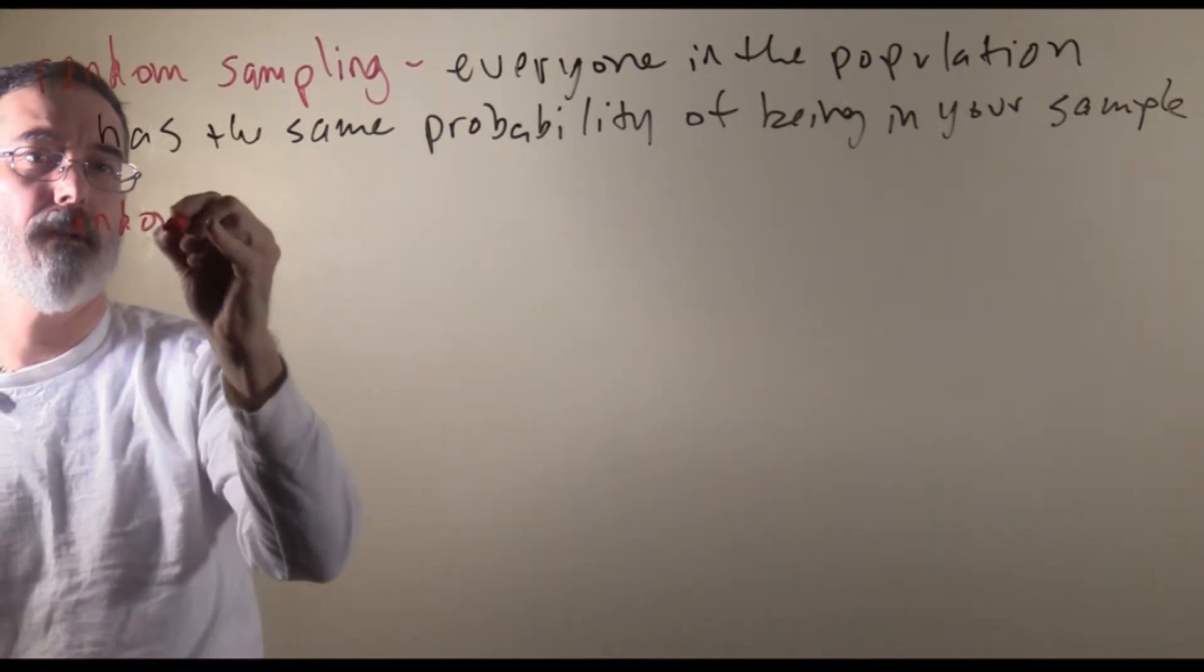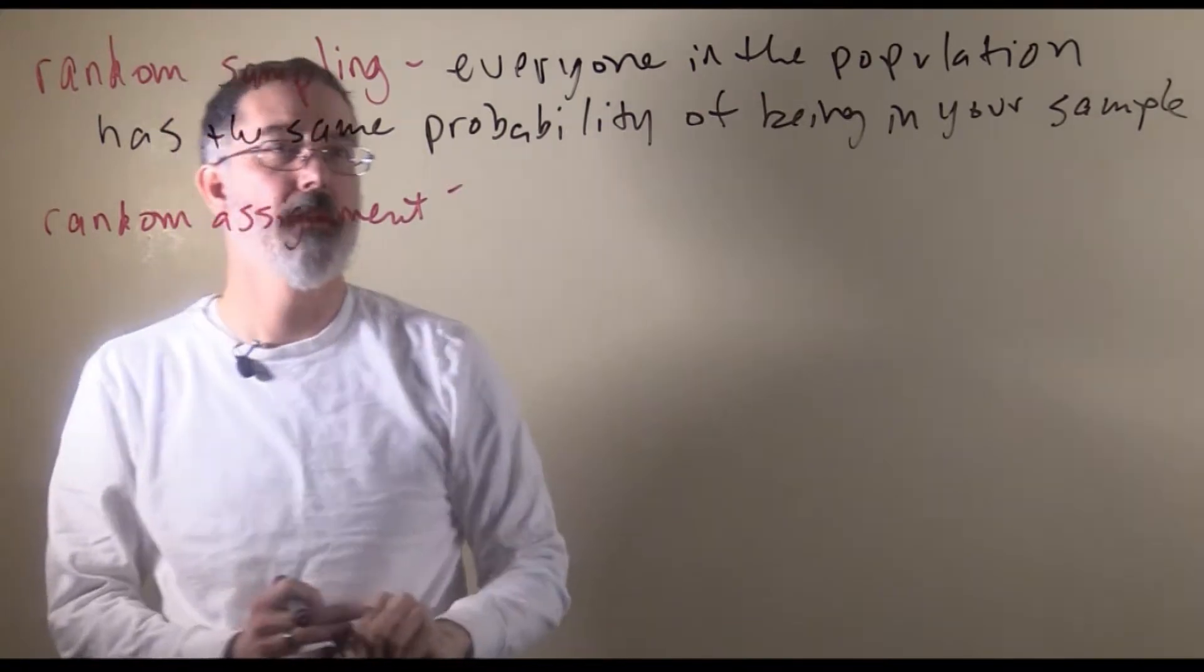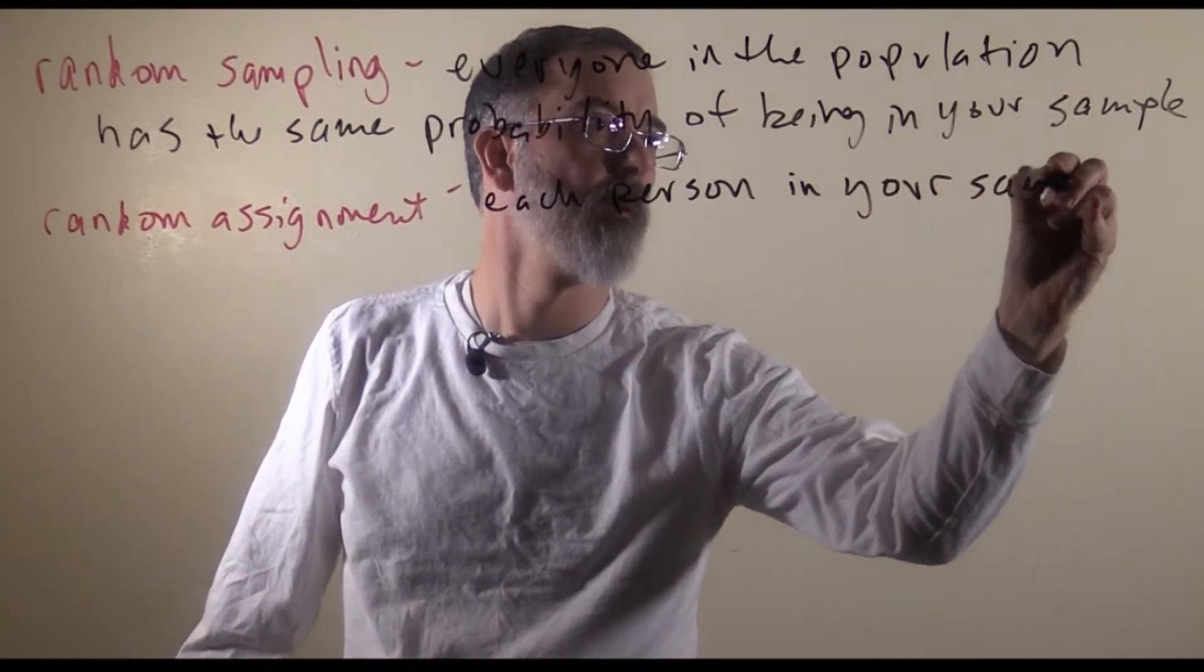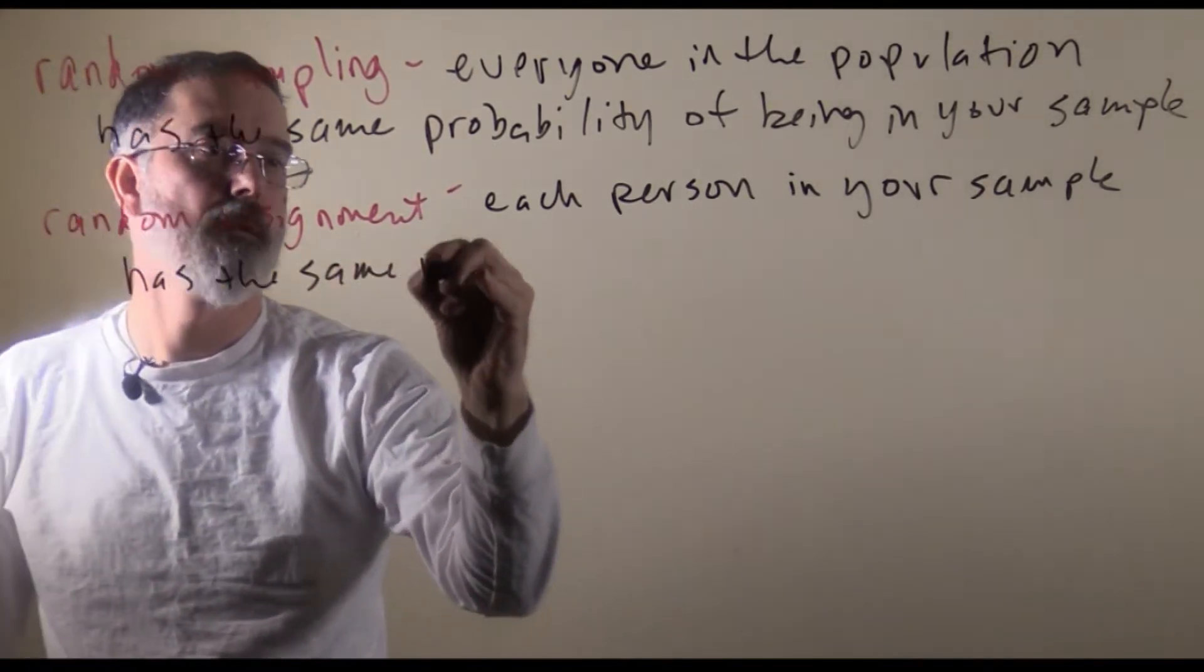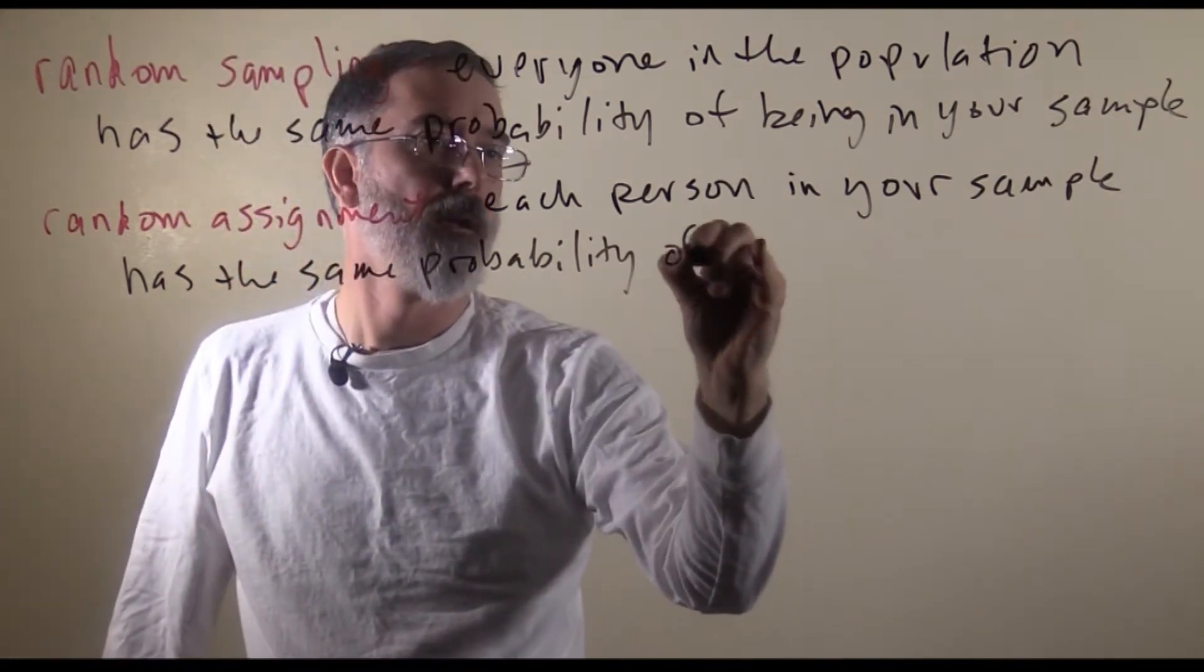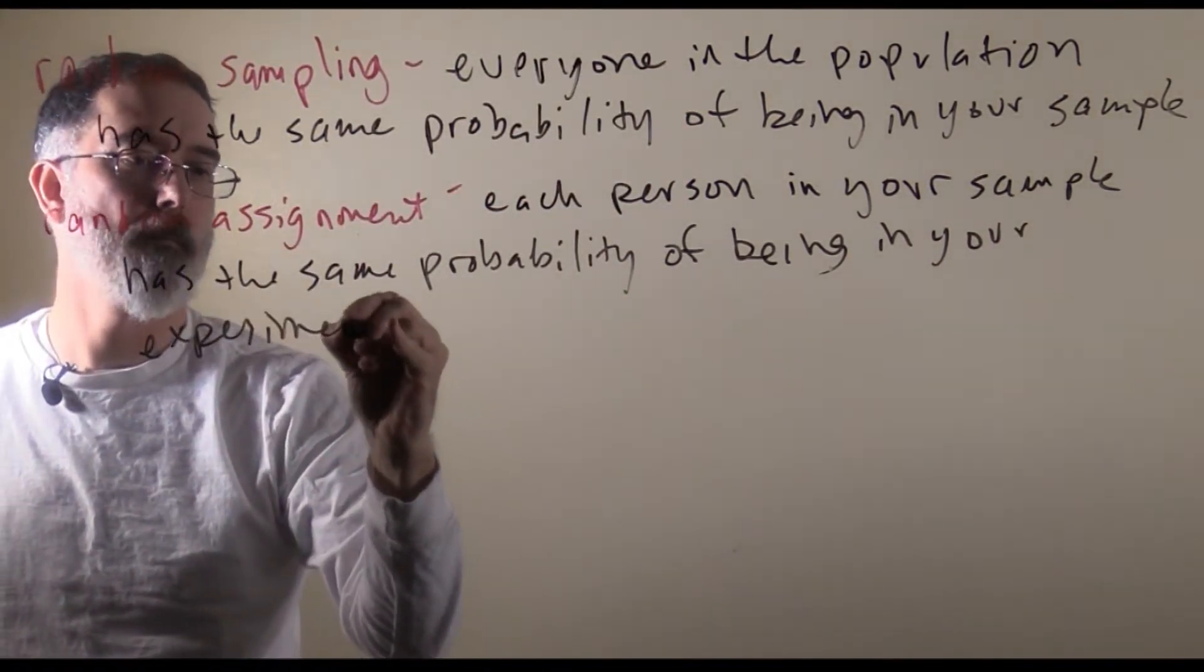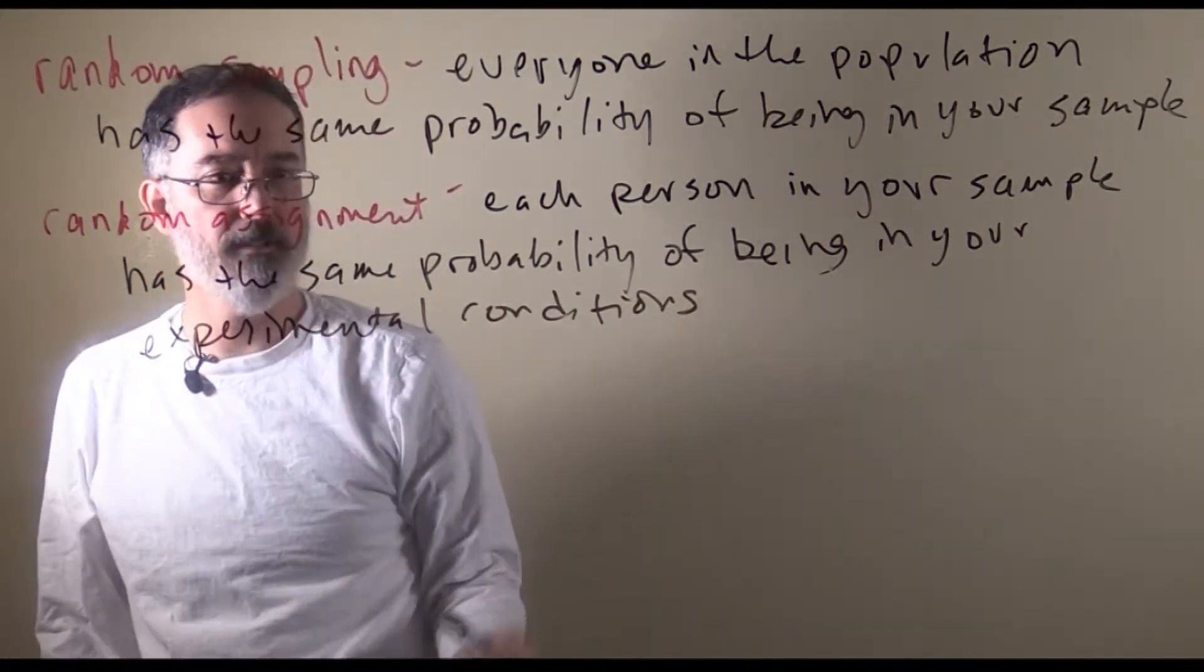There is this other concept called random assignment, and this is relevant for experiments. Each person in your sample has the same probability as everybody else in your sample of being in your experimental conditions. This is just for experiments.